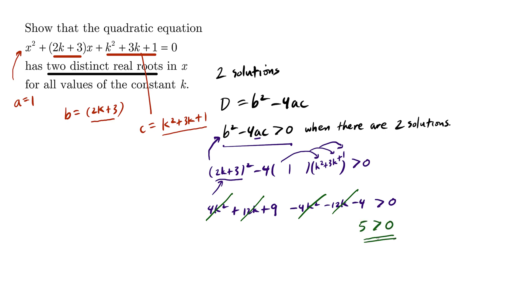We have a very interesting expression. Is 5 greater than zero? Is true always, regardless of what k is. So therefore, we have this expression as true that there are two distinct roots for all values of the constant k.